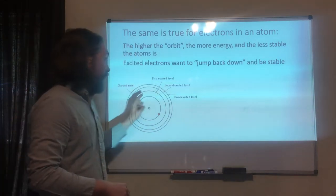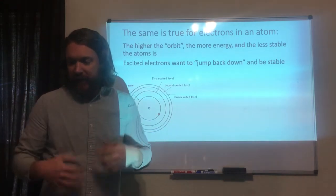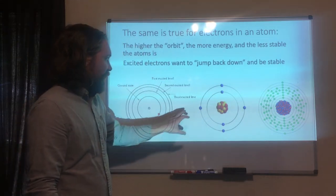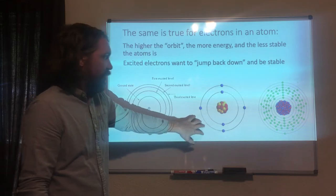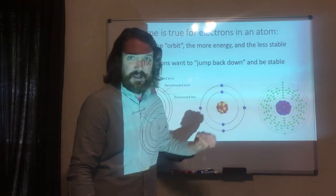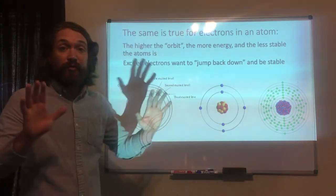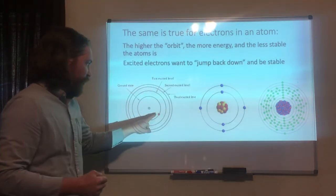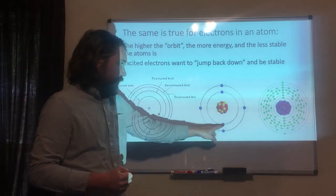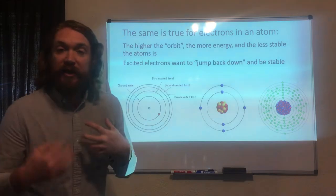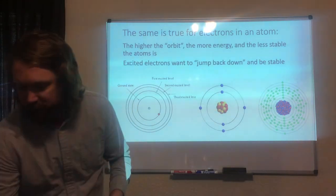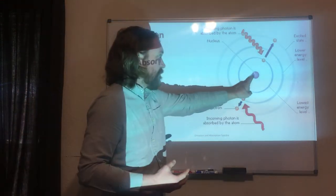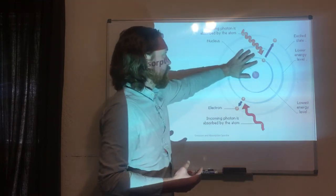The higher the orbit, the more energy it has and the less stable the atom is. Excited electrons want to jump back down and become stable. So how does an electron go from one orbital to the next? How do we jump from the ground state up? The way you have to do that is by getting energy — in this case we call that absorption.